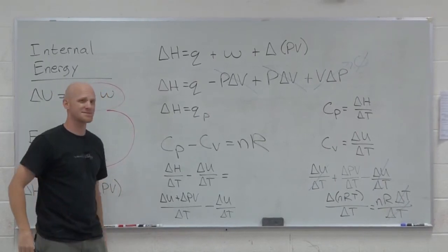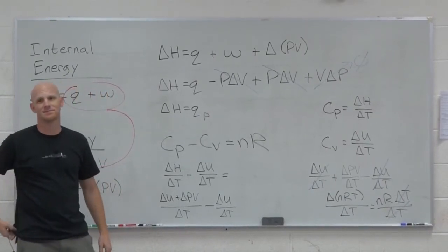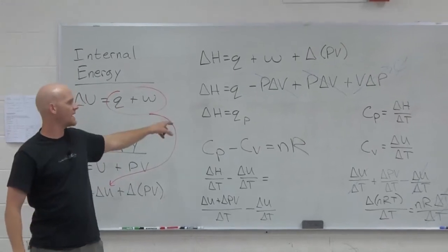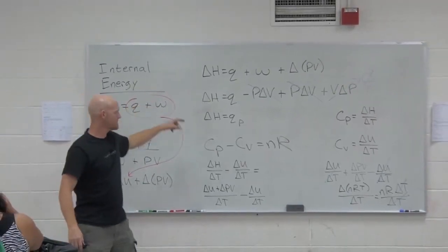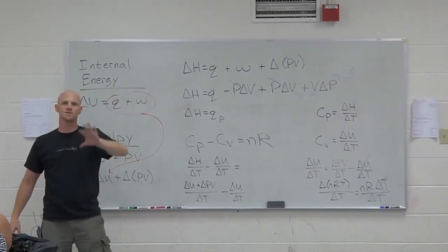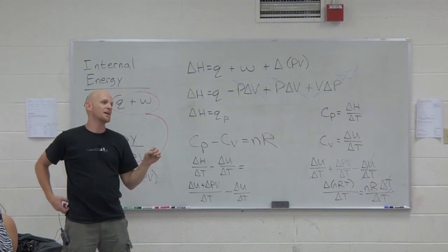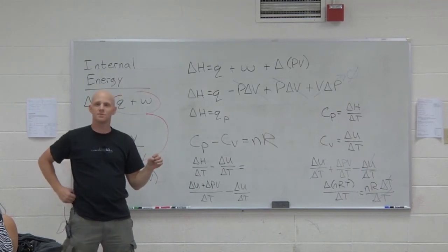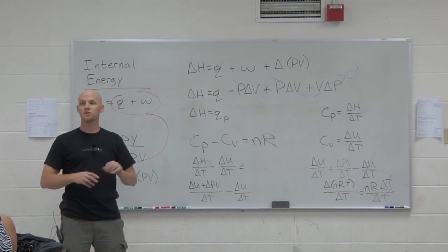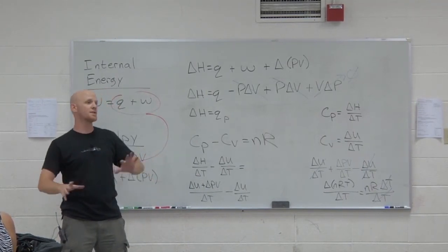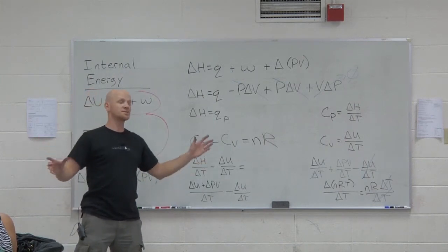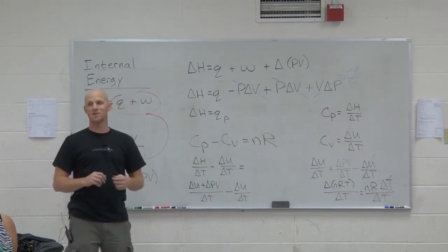Good times. I would go back to Cp minus Cv and the fact that delta H equals Q, and derive those for yourself a couple times before your exam, just so you know you can do it on your own without looking back at anything. It may or may not show up on your test, but it's worth your time to know.